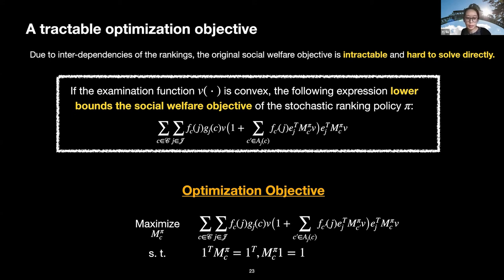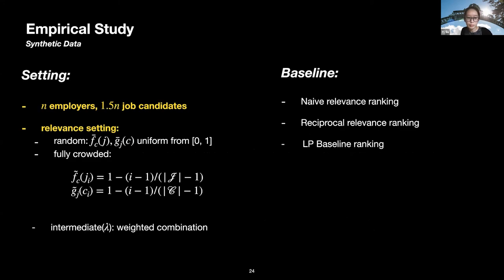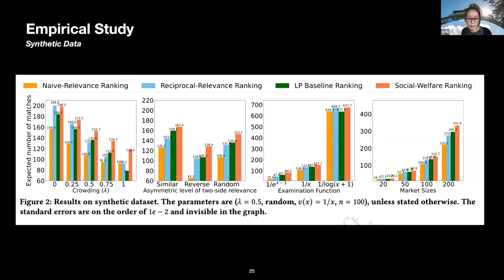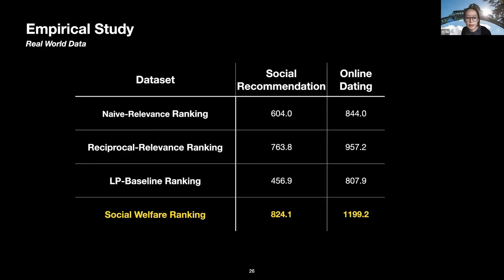Given this lower bound, we optimize our objective by maximizing it while ensuring the matrix W corresponds to a valid stochastic ranking by enforcing the doubly stochastic constraint. We empirically examine our proposed method on both synthetic and real-world datasets. In synthetic data, we vary dataset size, market crowdedness, and examination function modeling, and compare against baselines including naive relevance ranking, reciprocal relevance ranking, and an LP baseline. Our social welfare ranking achieves strong and robust performance across different matching market environments, especially in crowded markets with deep examination functions.